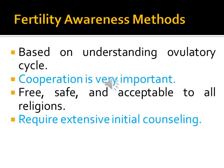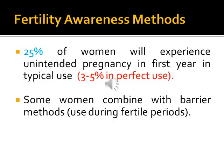Fertility awareness methods are based on understanding the ovulatory cycle. Cooperation between partners is very important. These methods are free, safe, and acceptable to all religions. They require extensive counseling for both partners to increase success rate. The success rate is more than 95 percent with perfect use, while the failure rate may reach 25 percent of women in the first year with typical use. Some women combine fertility awareness with a barrier method during the fertile period to increase success rate.